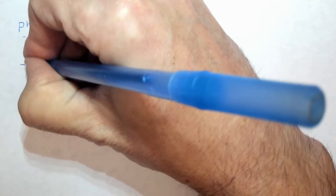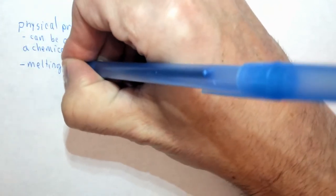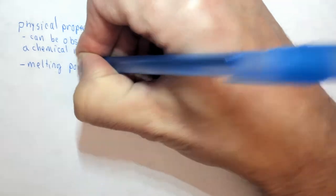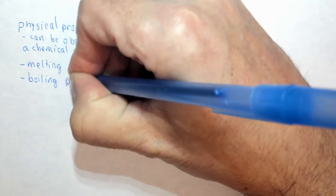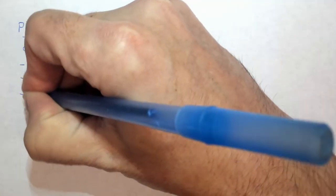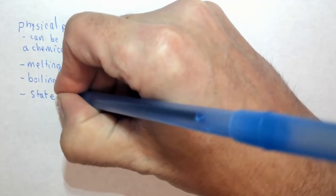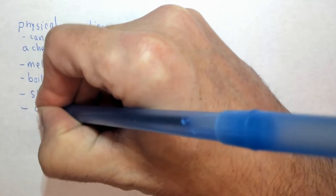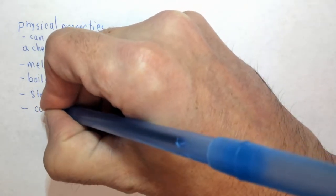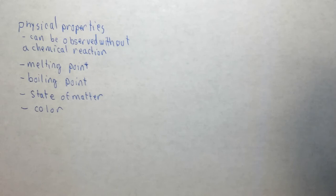And there are many physical properties, but to name a few, something like melting point or boiling point, and related to those things, state of matter, solid liquid gas. So there are many different physical properties that you could have for different things.